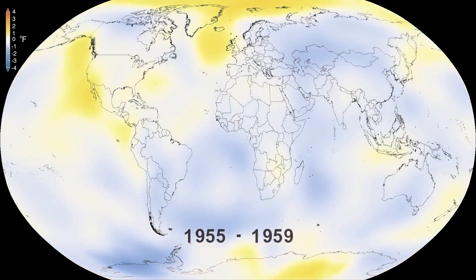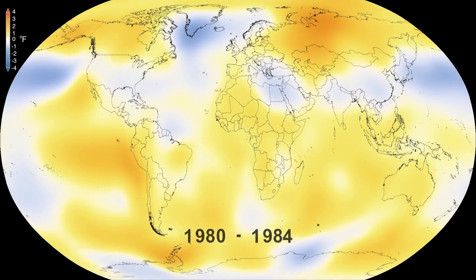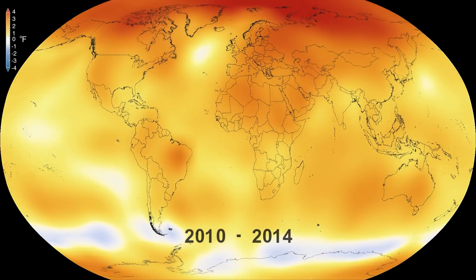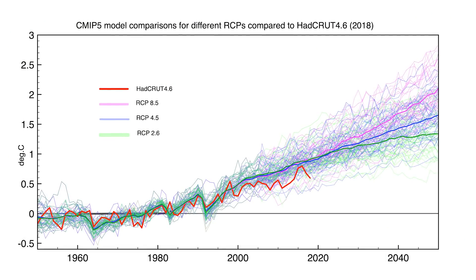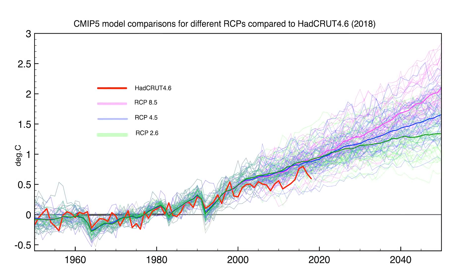A crucial question is how all the different feedbacks interact and what the total effect will be — in other words, what the total global warming will be. One way to get at an answer is to use climate models like the one shown here. Of course, all models are imperfect — in other words, they have biases. So climate scientists use lots of different models, all of which simulate the climate in slightly different ways and so have slightly different biases. The hope is that by taking the average across all these models, you get a more trustworthy answer for how big the feedbacks will be and so how hot the world will get.